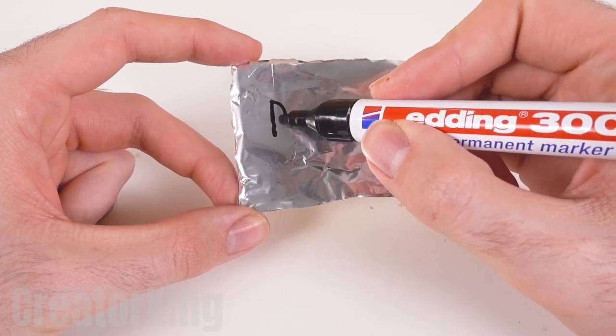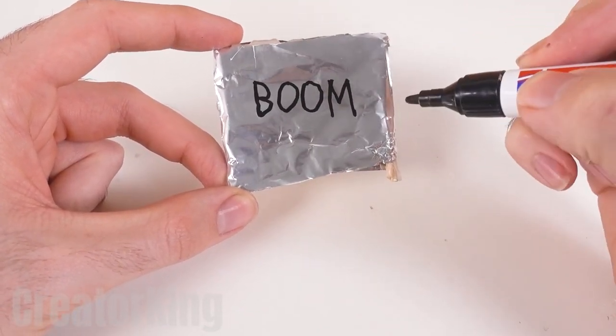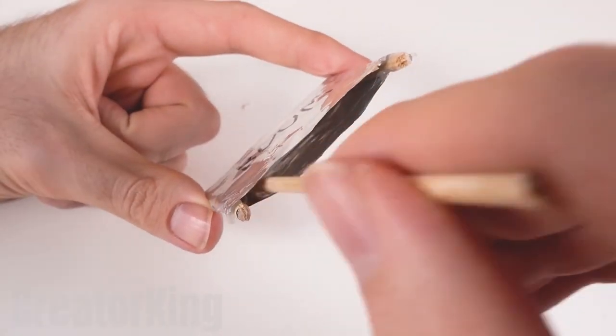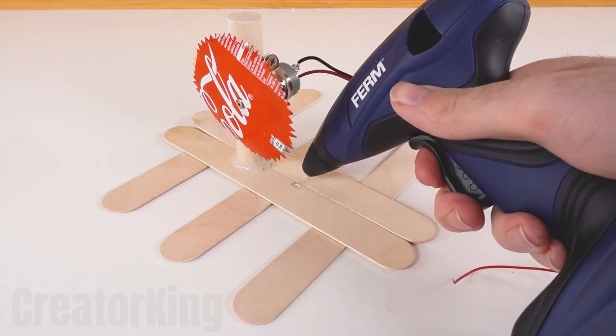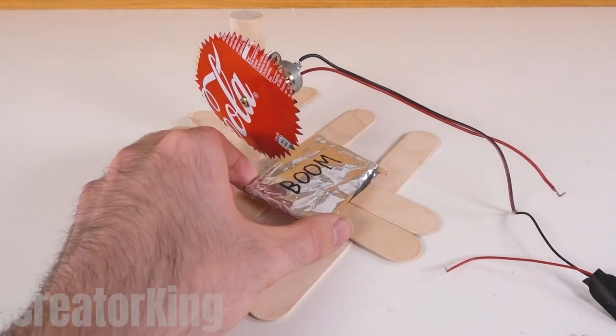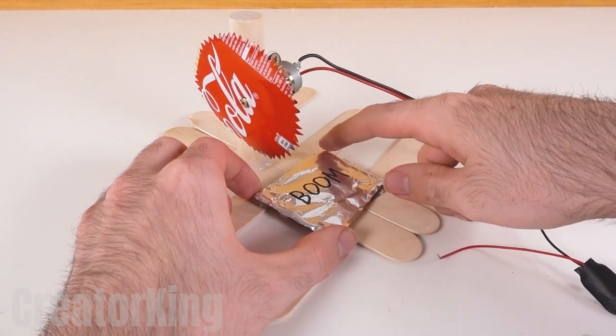With a marker, you can write a special word on it so that your friends know not to go near it or they could be seriously harmed. Place more hot glue on the wooden base and glue our makeshift pressure plate a short distance away from the deadly saw.